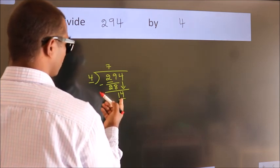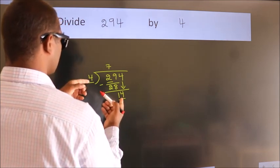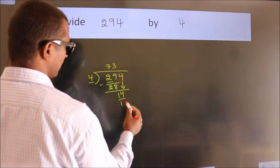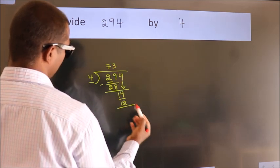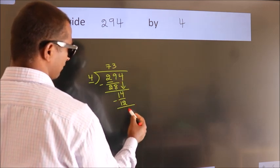A number close to 14 in the 4 table is 4 times 3 equals 12. Now we subtract. We get 2.